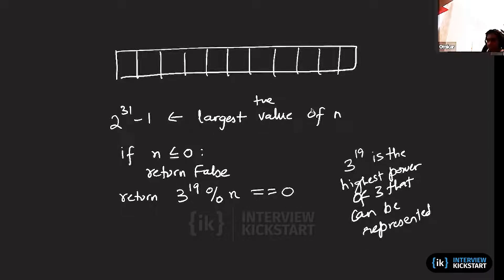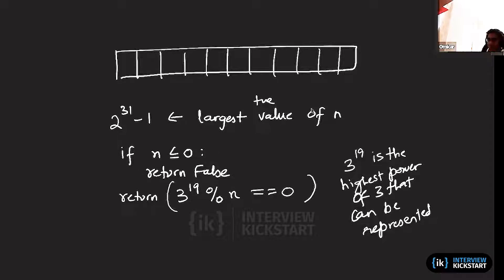In systems like Python you can actually compute beyond 32 bits, so you could pick any power of 3 that's beyond 32 bits and it would be fine. But in LeetCode's strict scenario you would not be allowed to pick values that are not representable in 32 bits, so you'd have to do the work to figure out which is the highest power of 3. This solution runs in constant time with no auxiliary space — but it's not a very good problem.